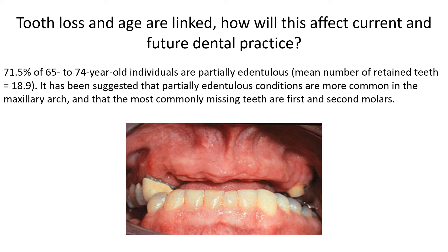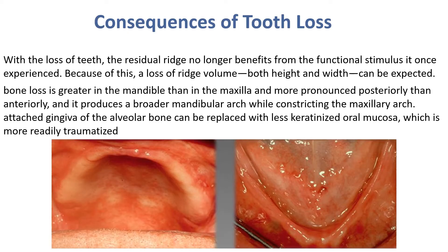With the loss of teeth, the residual ridge no longer benefits from the functional stimulus it once experienced. Because of this, a loss of ridge volume — both height and width — can be expected. Bone loss is greater in the mandible than in the maxilla and more pronounced posteriorly than anteriorly, producing a broader mandibular arch while constricting the maxillary arch.